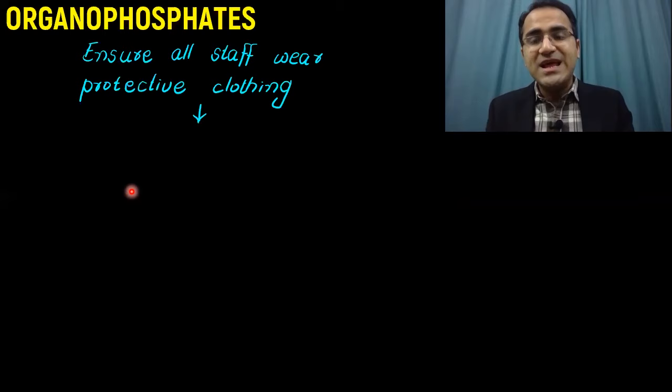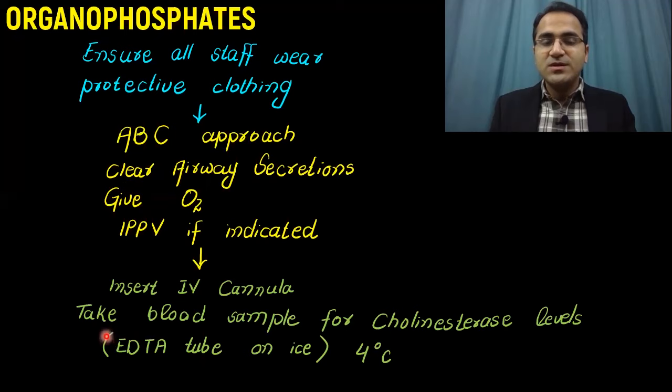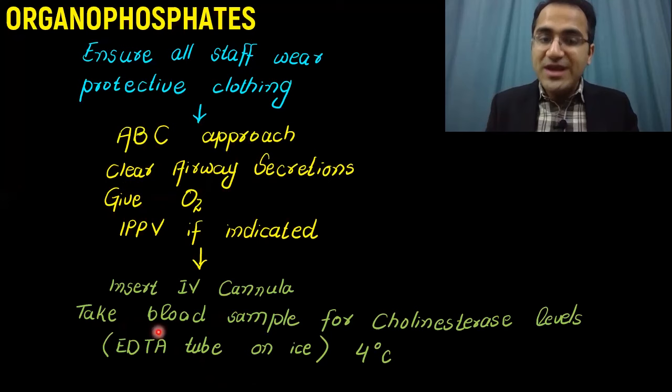Then you remove all the clothing of the patient and change it with hospital clothing to reduce absorption of poison. You have an ABC approach. You clear the airway secretions, do the suction and give oxygen. In some cases, you might also need intermittent positive pressure ventilation. You insert an IV cannula and maintain the venous access.